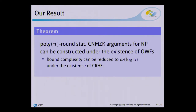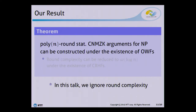And in this work, I studied this problem and showed that the answer is yes. I showed that a polynomial-round statistical concurrent non-malleable zero-knowledge argument for NP can be constructed under the existence of one-way functions. And I also note that if we assume the existence of a collision-resistant hash function, then I can reduce the round complexity to logarithmic. Because of the lack of time, in this talk I will focus on how to construct statistical concurrent non-malleable zero-knowledge argument from one-way functions.